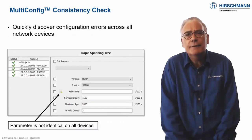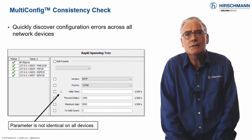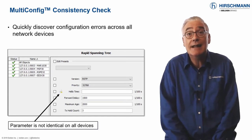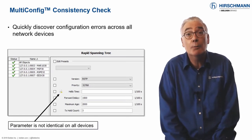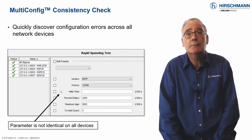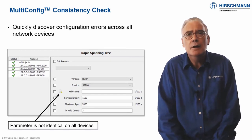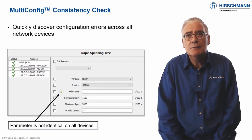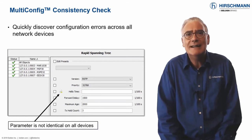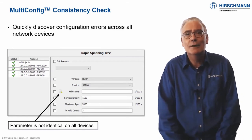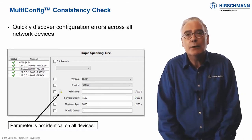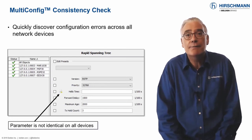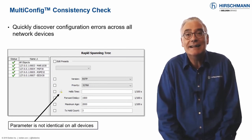Consistent configuration across switches is essential for stable network operation and maximum uptime. There are many ways to analyze configurations across devices, but sometimes all you need is a quick check. The multi-config consistency check provides you with a fast and easy solution.